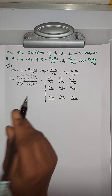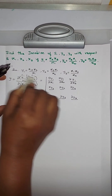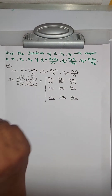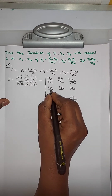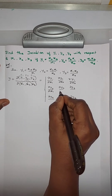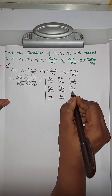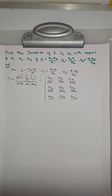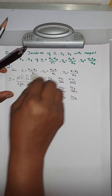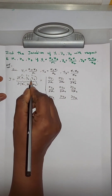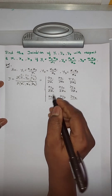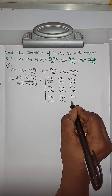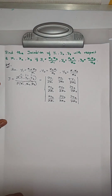The second row is obtained by differentiating y2 with respect to x1, x2, and x3, giving ∂y2/∂x1, ∂y2/∂x2, ∂y2/∂x3. Similarly, the third row gives ∂y3/∂x1, ∂y3/∂x2, ∂y3/∂x3. This is the formula for the Jacobian.